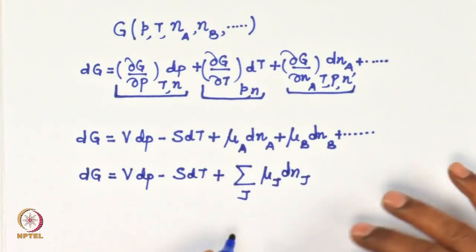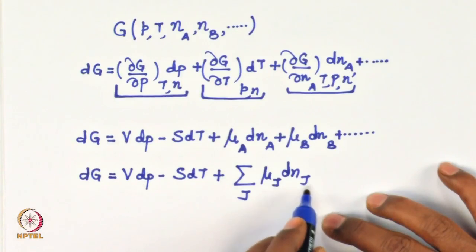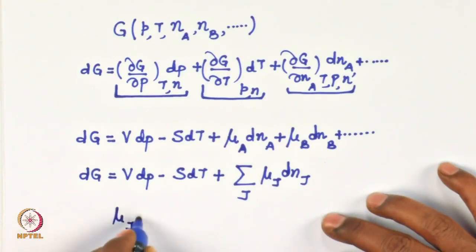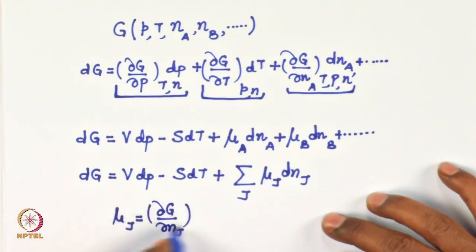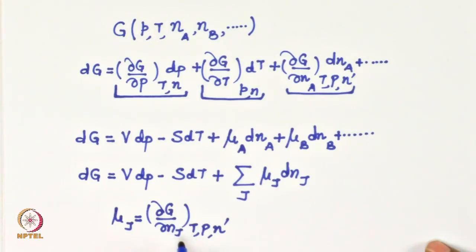From this equation we recover the definition of chemical potential: if temperature, pressure, and composition of everything else are fixed, then μ_j = (∂G/∂N_j) at constant T, P, and N-prime. When you fix the temperature this term disappears, when you fix the pressure this term disappears, and when you fix the composition of everything else, all those terms vanish except the one corresponding to species j.